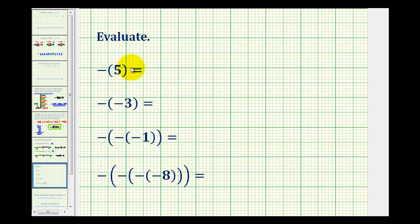We want to evaluate the following expressions. Looking at this first example, we can think of this two ways. We can just think of this as negative 5, but we can also think of this as the opposite of positive 5, which of course is still just negative 5.